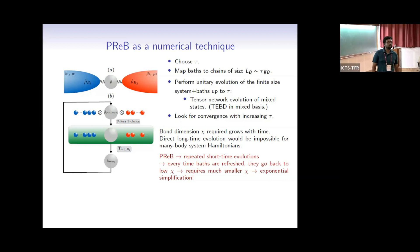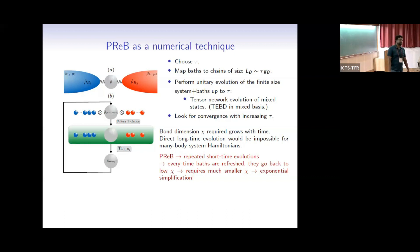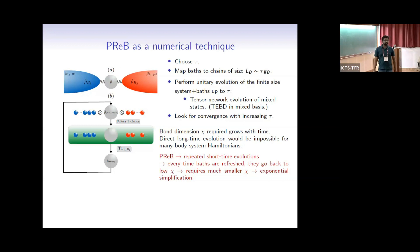What sets the time τ for convergence? It is in some sense the finite memory time given by the bath, but it is hard to estimate directly — you have to look for convergence with increasing τ. When you refresh the bath, you set it to the initial density matrix, and for the system you take the reduced density matrix at that time. You do the fully unitary evolution, trace out the baths to get the state of the system, and use this as the initial state for the next step — killing the entanglement between the bath and the system.